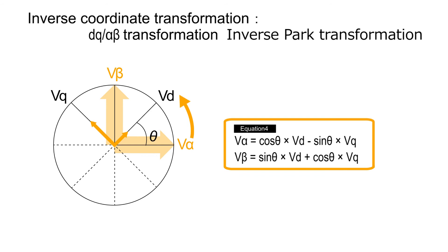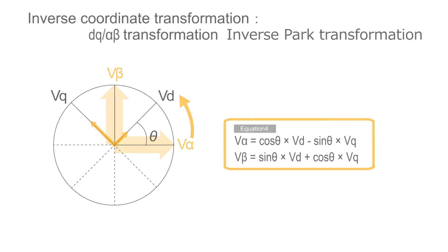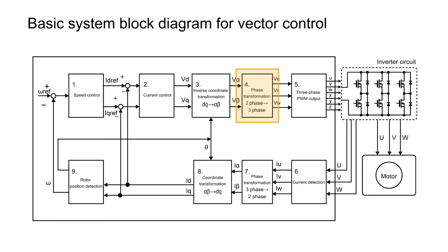In the final process, three-phase voltage is used, therefore the values are converted from rotational coordinates to stationary coordinates. In coordinate conversion, stationary coordinates are converted to rotational coordinates, then inverse transformation is performed. That concludes the description. In the next chapter, we will describe space vector modulation.